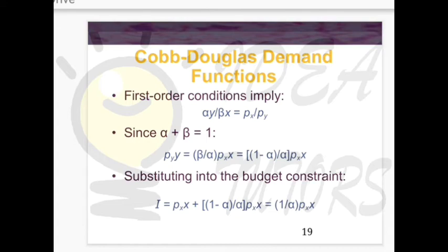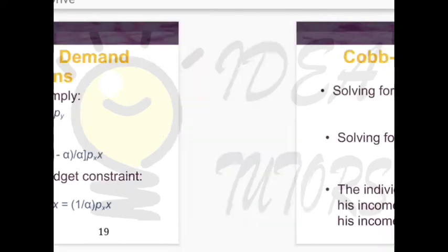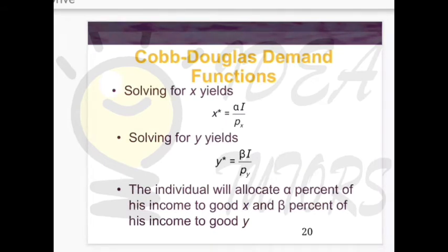After substituting this value into the budget constraint equation, we get the maximum-utility values x-star and y-star. For this general Cobb-Douglas function, x-star equals alpha times income I divided by px (the price of X), and y-star equals beta times income I divided by py (the price of Y).